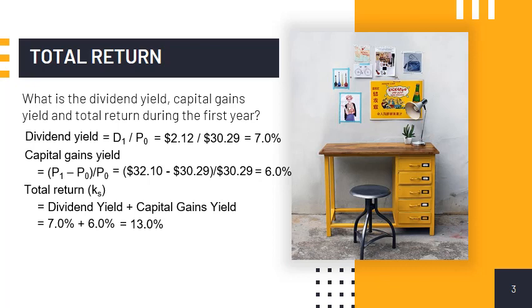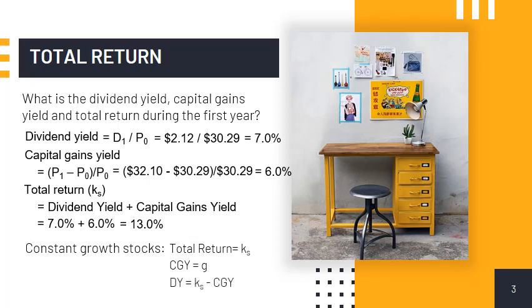In summary, for constant growth stocks, the total return — which equals the required rate of return — can be broken down into capital gains yield and dividend yield. Capital gains yield equals the constant growth rate, and dividend yield is simply the total return less capital gains yield.